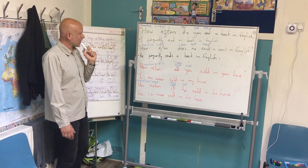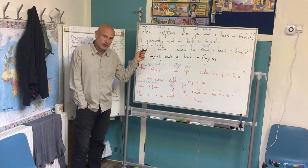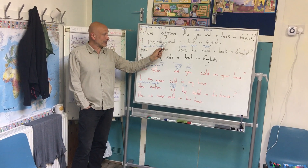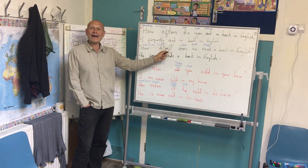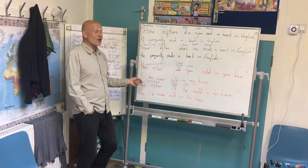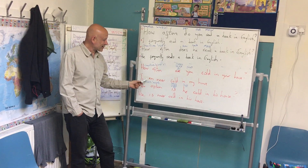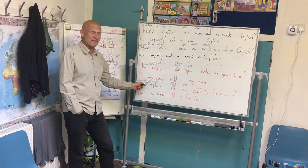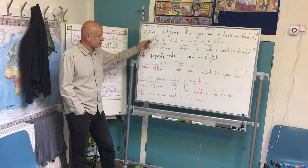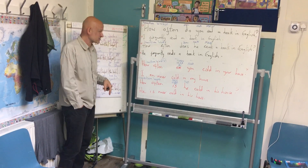And remember one other thing. I taught you adverbs of frequency, and I said make sure you put the adverb before the main verb. But when you are using the verb to be, it comes after the main verb to be. So that's a big difference that we need to remember. And now we're going to practice this for a while. Well done.